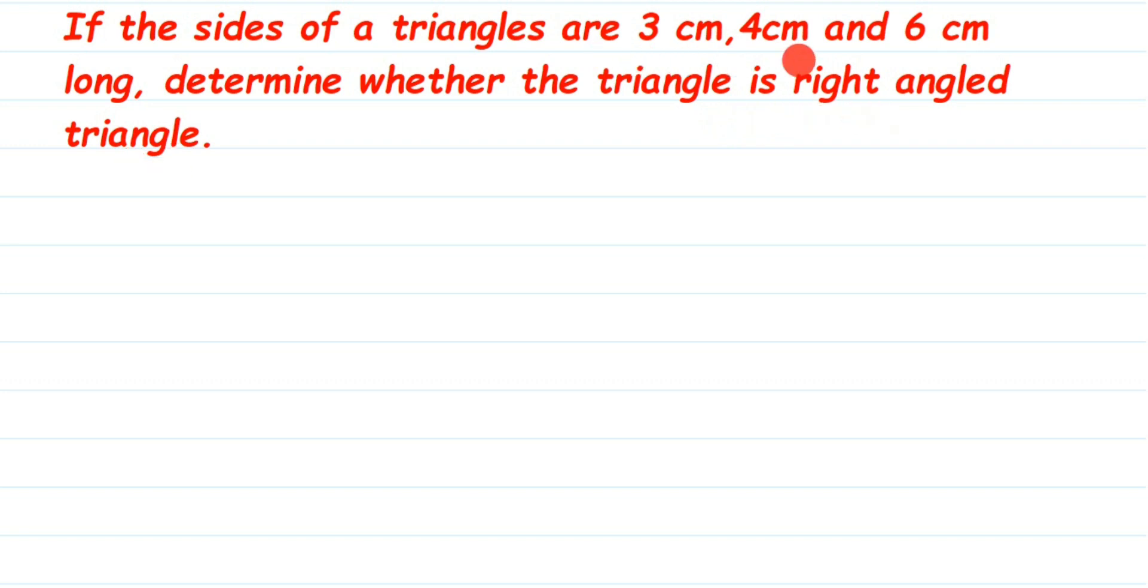Here they have given the sides of a triangle and they are asking us to check if the triangle is a right angle triangle. Right angle triangle means that one angle will be 90 degree. But here they have given the sides, how to find out using the sides here.